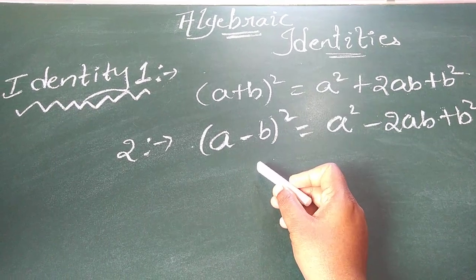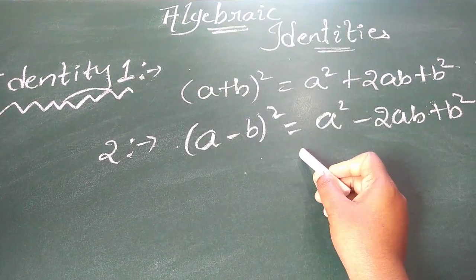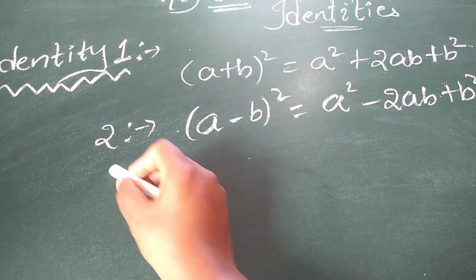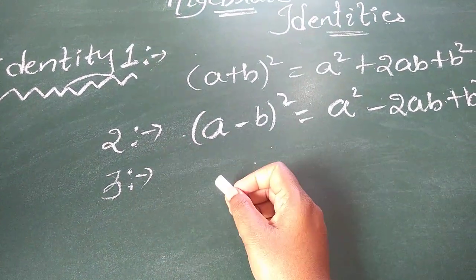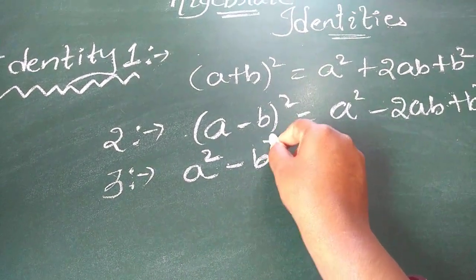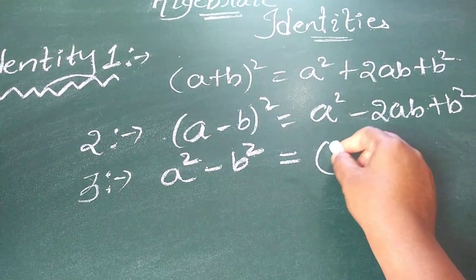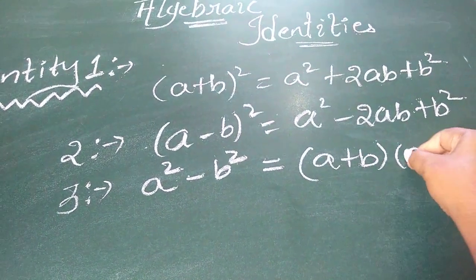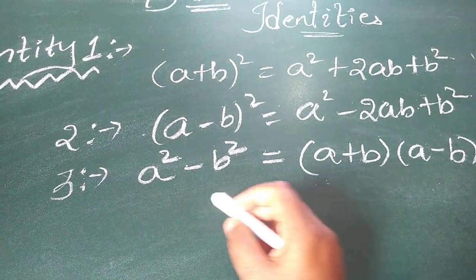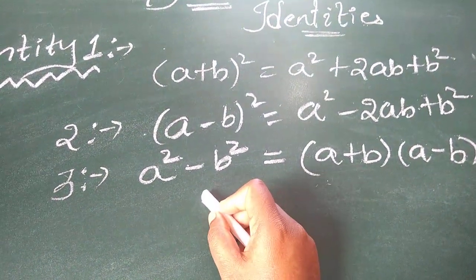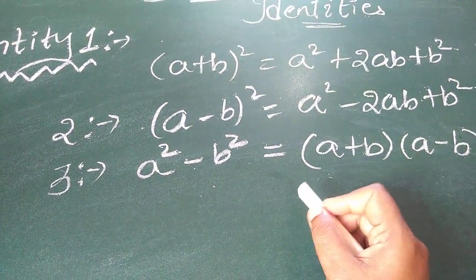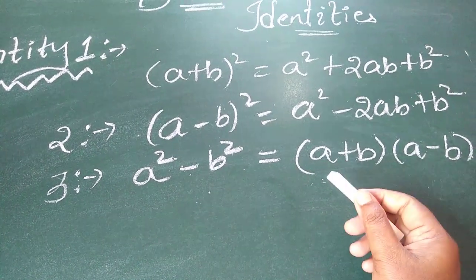Here is our second identity: a minus b whole square, which is equal to a square minus 2ab plus b square. And our third identity — many children get confused by this. Here is a square minus b square, and its expansion is a plus b into a minus b. When you do the binomial multiplication, you will get a square minus b square. Many children, whenever I say a square minus b square, they give me the answer a square minus b square minus 2ab. But there is no identity with that name.